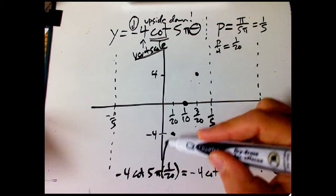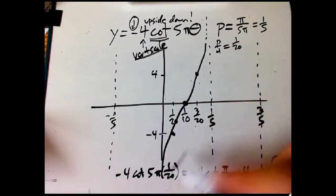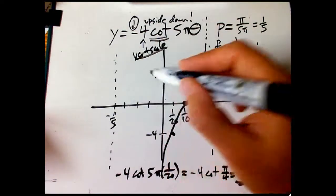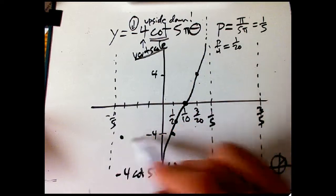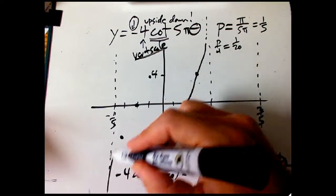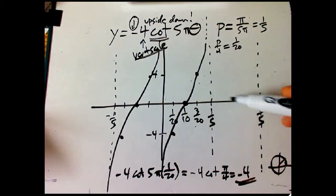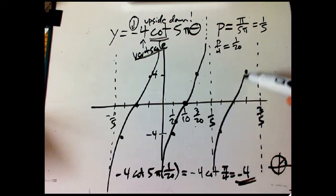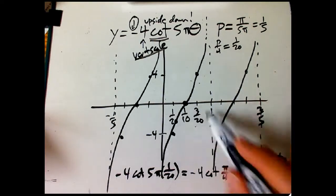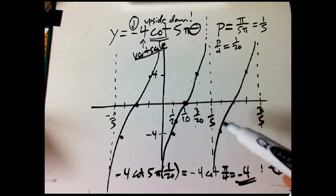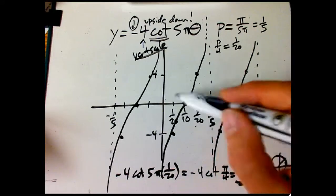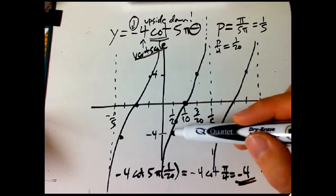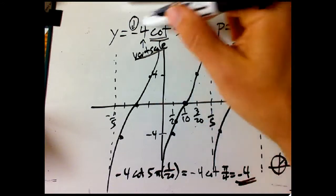It starts low, gets a little less deep, then goes up high — it's a curve, and even for me it's a little hard to draw nicely. Mark a couple more quarter period points for the next period: starts low at minus four, ends high. Connect the dots roughly, then three more quarter period points. Plot them carefully at the right heights matching the vertical scale, linked up to the asymptotes.